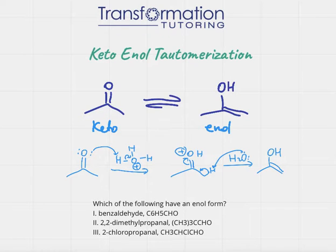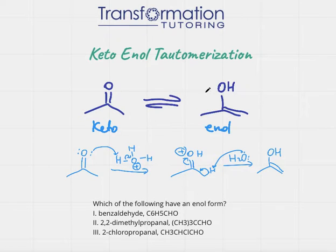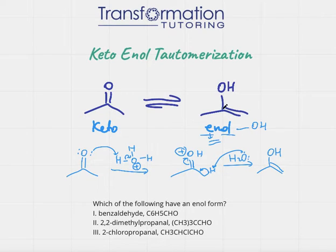Keto-enol tautomerization is a reaction that converts the keto form into the enol form and the enol form back to the keto form, so there is an equilibrium between these two forms of a molecule. The keto form has a C double bond O, and the enol form comes from the words 'en' and 'ol' — 'en' means there is a double bond and 'ol' means we have an alcohol. So when we have a carbon with OH next to a double bond, that is called an enol.